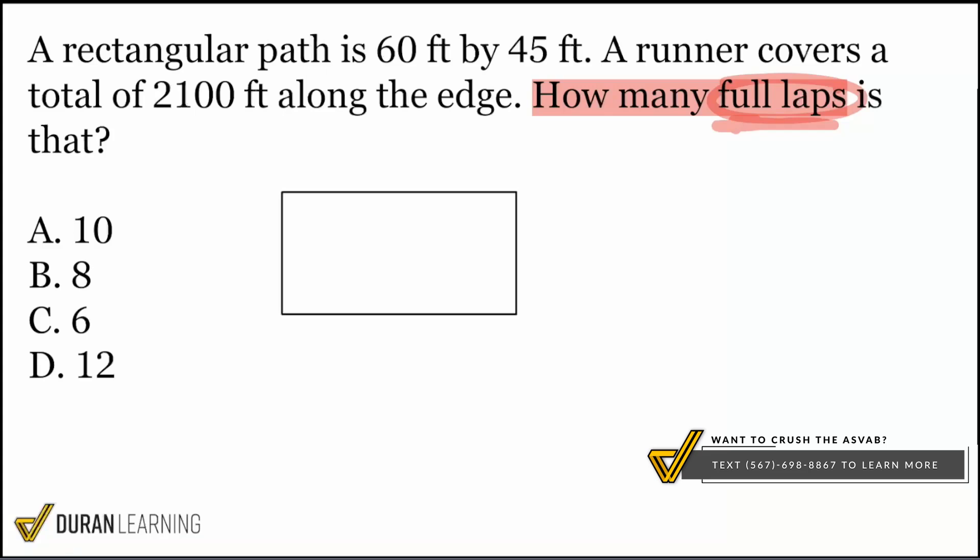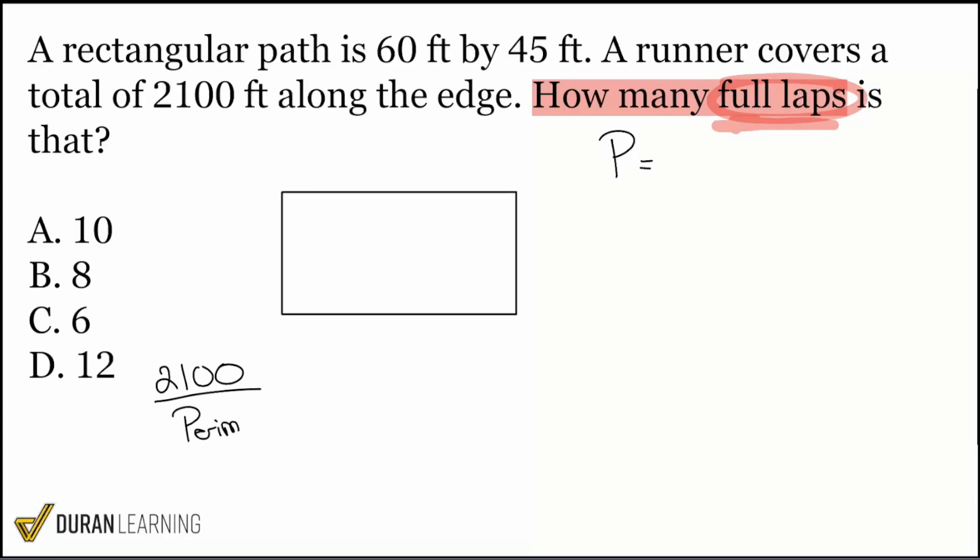So when we think about this problem, this is how we want to think about it. It says, how many full laps is that going to be? So if we knew how long one lap was, we could divide this total of 2,100 feet and we can divide it by whatever the perimeter is. Because when we divide it, that'll tell us how many full laps we can get. So step one is going to be to find the perimeter. Step two is going to take the 2,100 that we have and divide it by that perimeter. Because we'll see how many times the perimeter fits in and that'll let us know how many laps we can achieve.